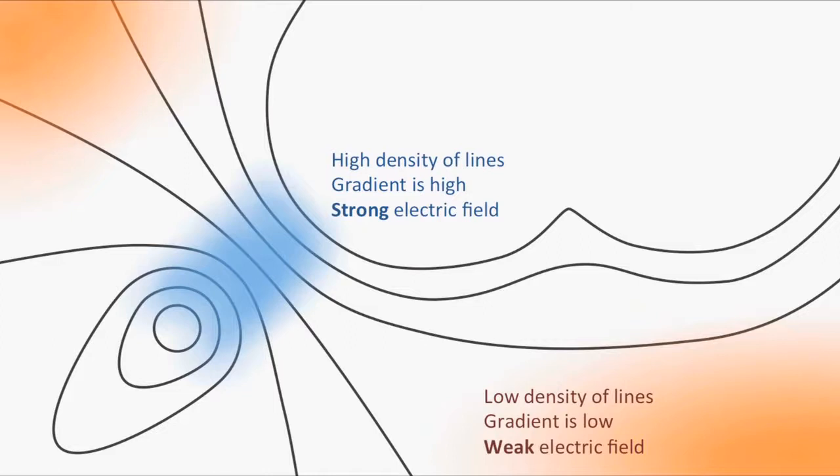Because the electric field is proportional to the gradient of the potential, the places where our lines are more closely packed will have a stronger electric field. In the red areas, where equipotential lines are far apart, the gradient of the potential is smaller. Therefore, the electric field will be weaker. We can use this as a guide when drawing our field vectors.